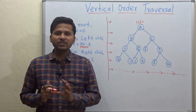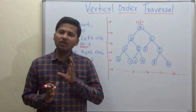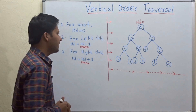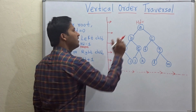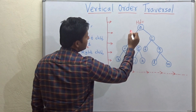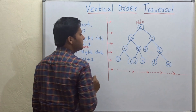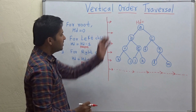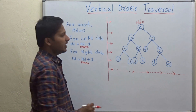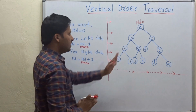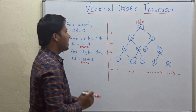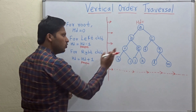Hello friends, today we are going to see how to make a vertical order traversal in a binary tree. So let's see the example. For making the vertical order traversal, we are going to assign the horizontal distance for every node in this tree. The horizontal distance is the distance from one side of the tree — in this case from the left side. So let's assign the horizontal distances to each node.